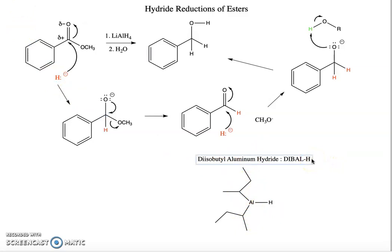And the reason that diisobutyl aluminum hydride allows us to do something different, in order to understand that we need to look a little bit more in detail at the reaction that's happening. In particular, we need to look in more detail at this complex right here that I've just drawn as an anion.